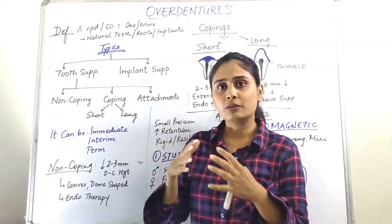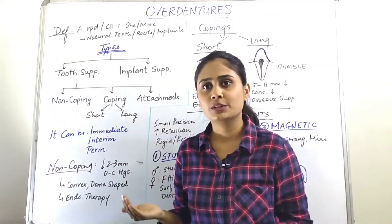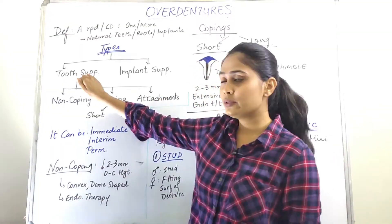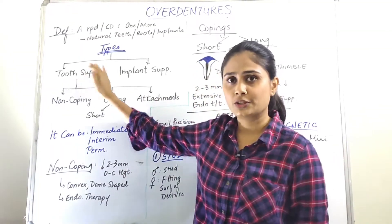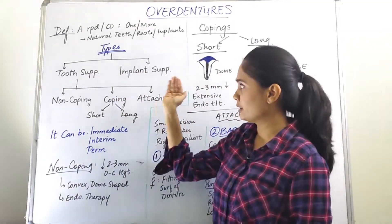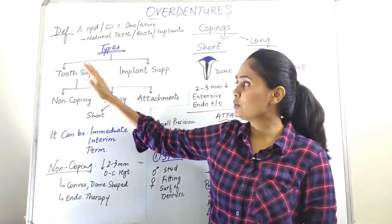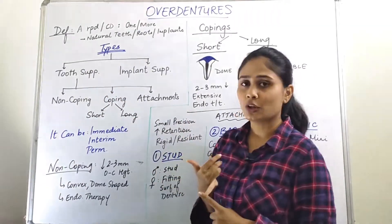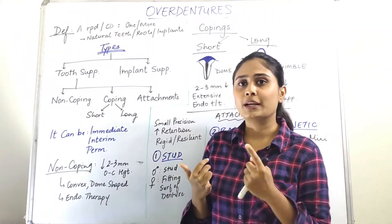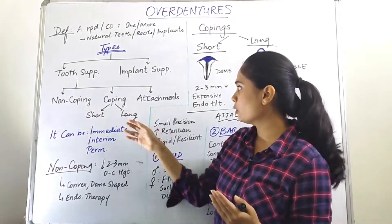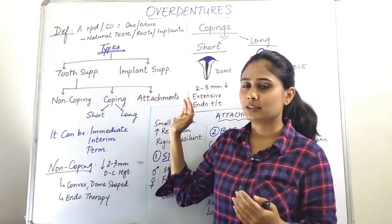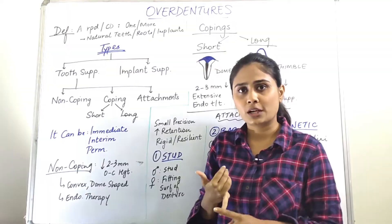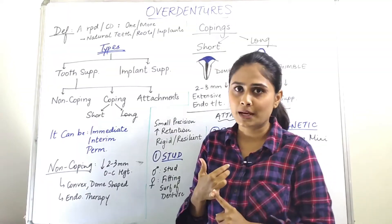Moving on further, we will look at the types and how overdentures are grossly divided. Overdentures are divided into tooth-supported overdentures and implant-supported overdentures. In tooth-supported, we further divide into three types: non-coping, coping — which can be further divided into short and long — and the third is attachment. In attachment, we will look at stud attachment, bar attachments, and magnets.